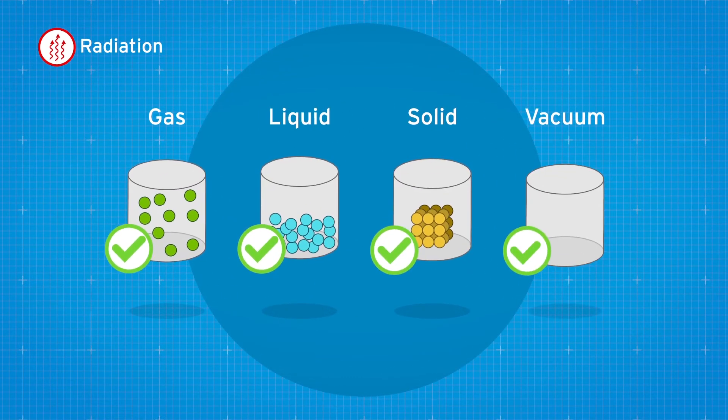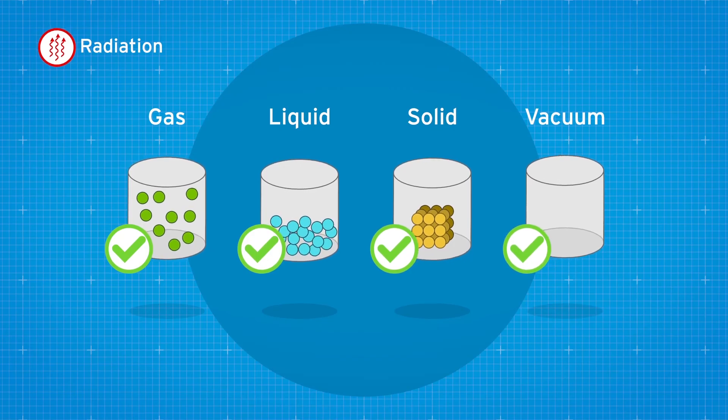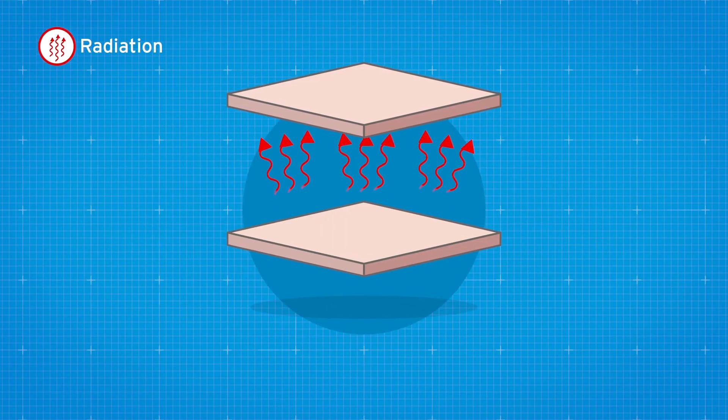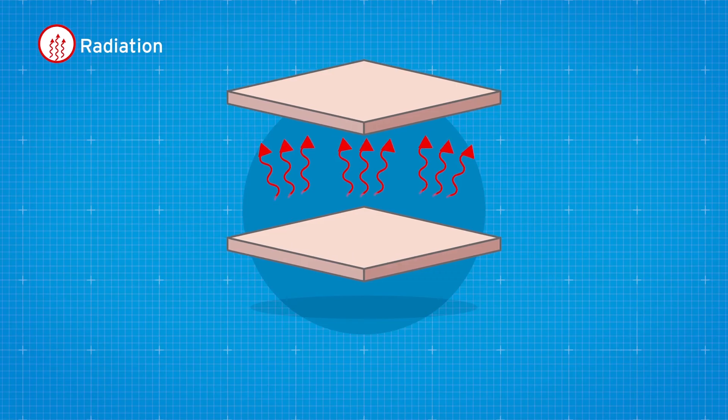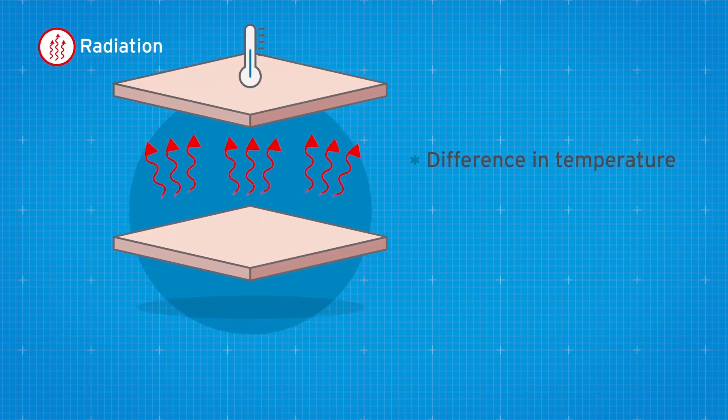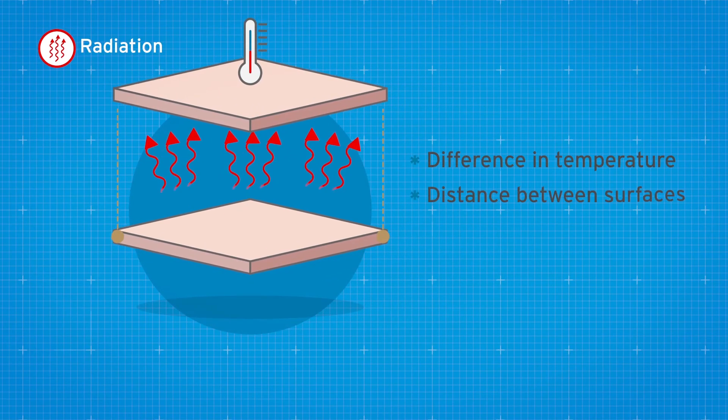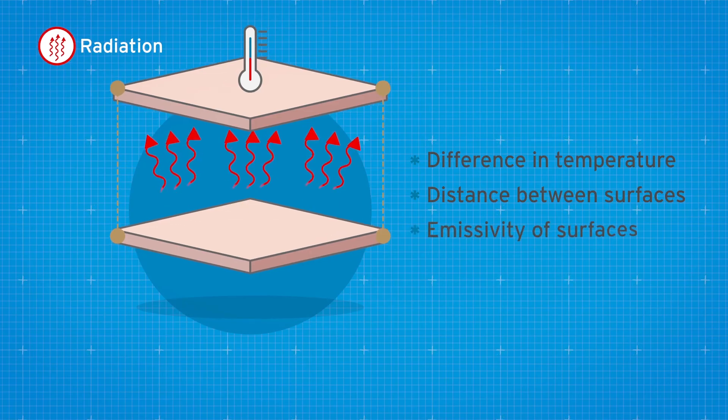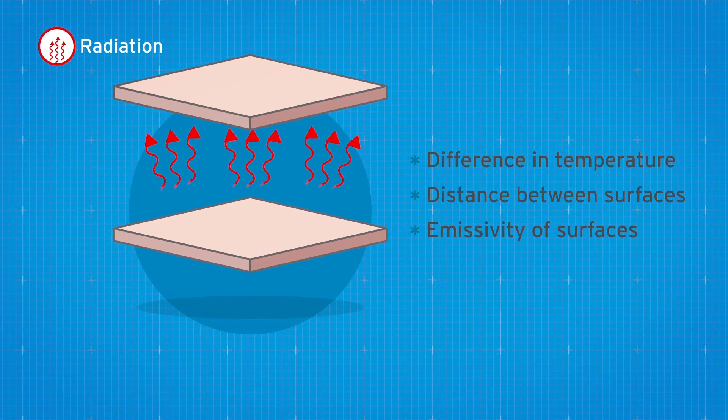Radiation can occur in gases, liquids, solids, and even in a vacuum. The rate of heat transfer through radiation is controlled by the difference in temperature of the surfaces, the distance between these surfaces, and the emissivity of the surfaces.